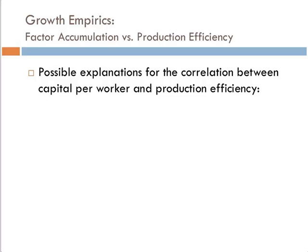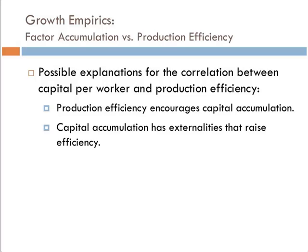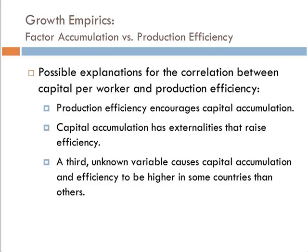Some possible explanations: productive efficiency encourages capital accumulation — if we're more efficient, the marginal product of capital goes up, the return to buying capital goes up, and so we want to buy more capital. Capital accumulation has externalities that raise efficiency. And a third unknown variable — some unobserved x-factor — causes both capital accumulation and efficiency to be higher in some countries than others. It just works better in some economies than others.